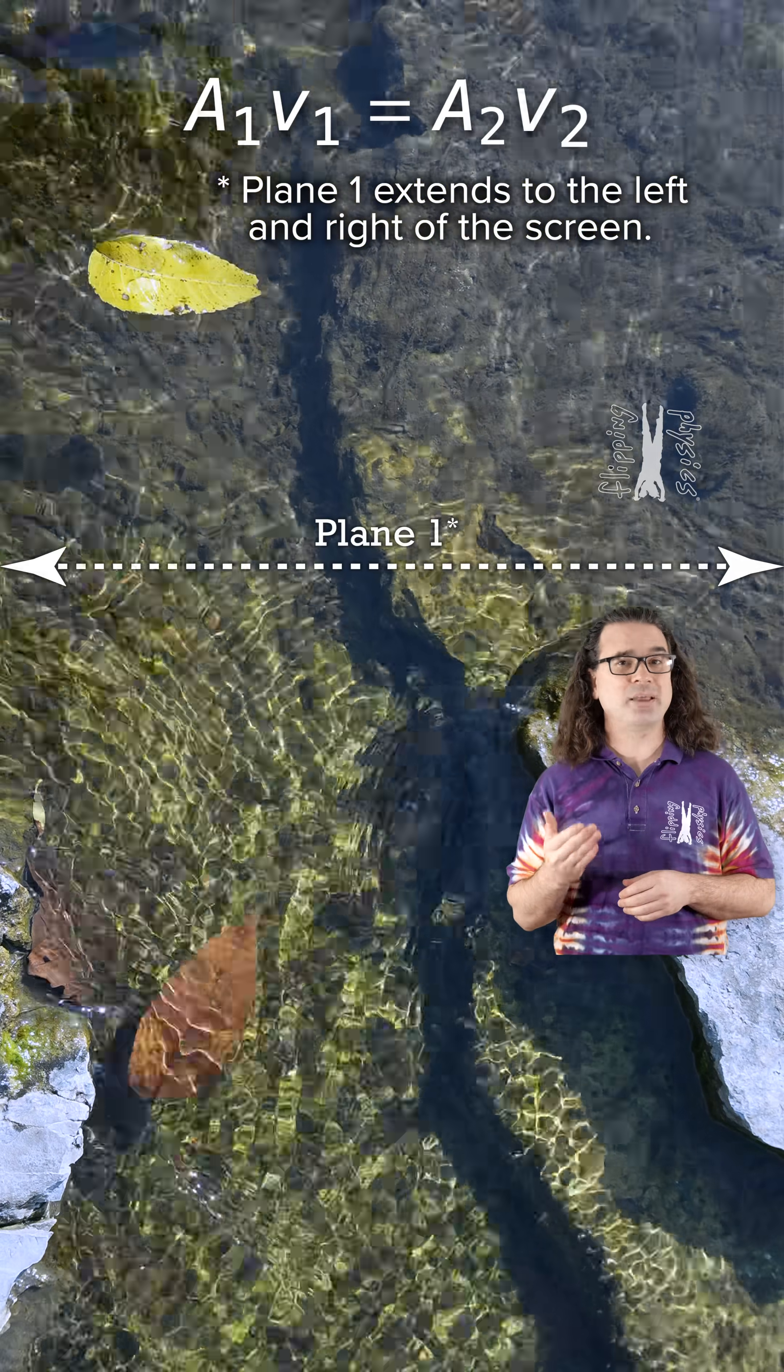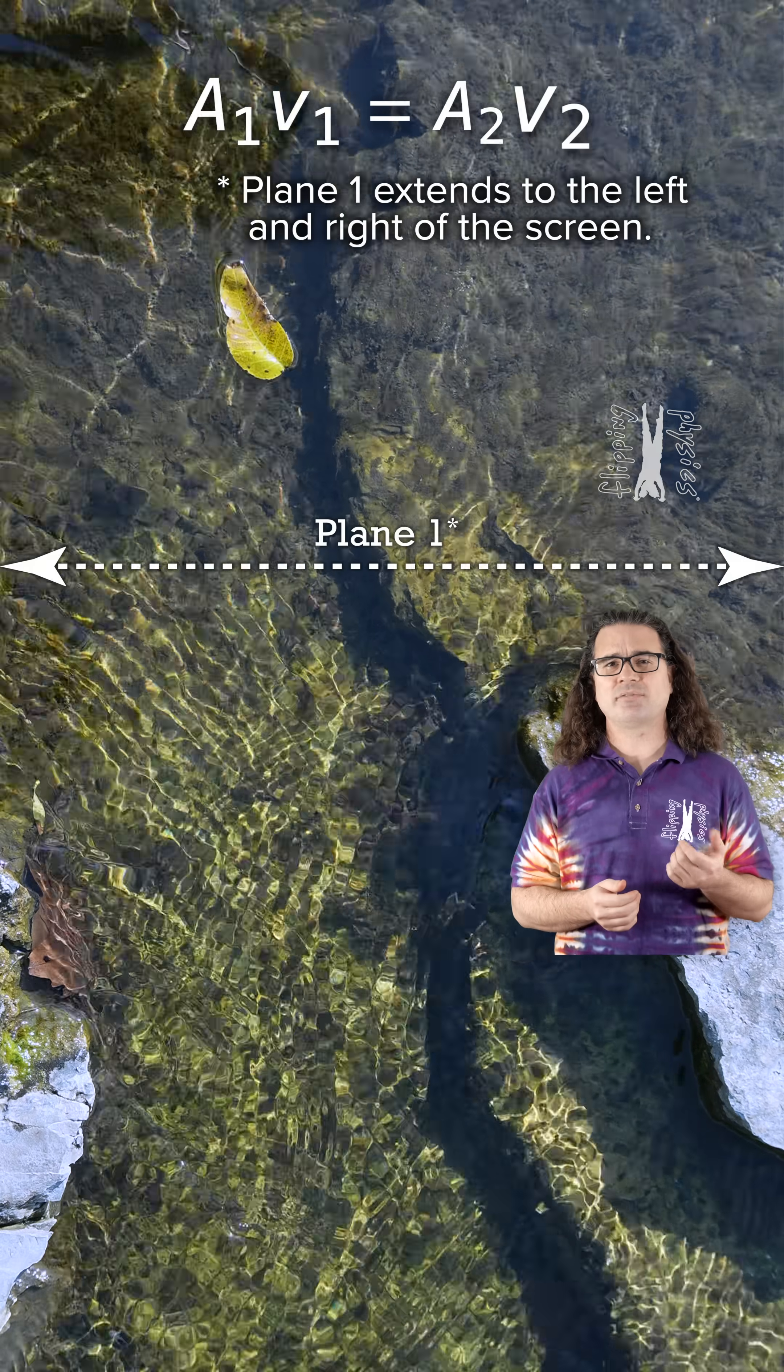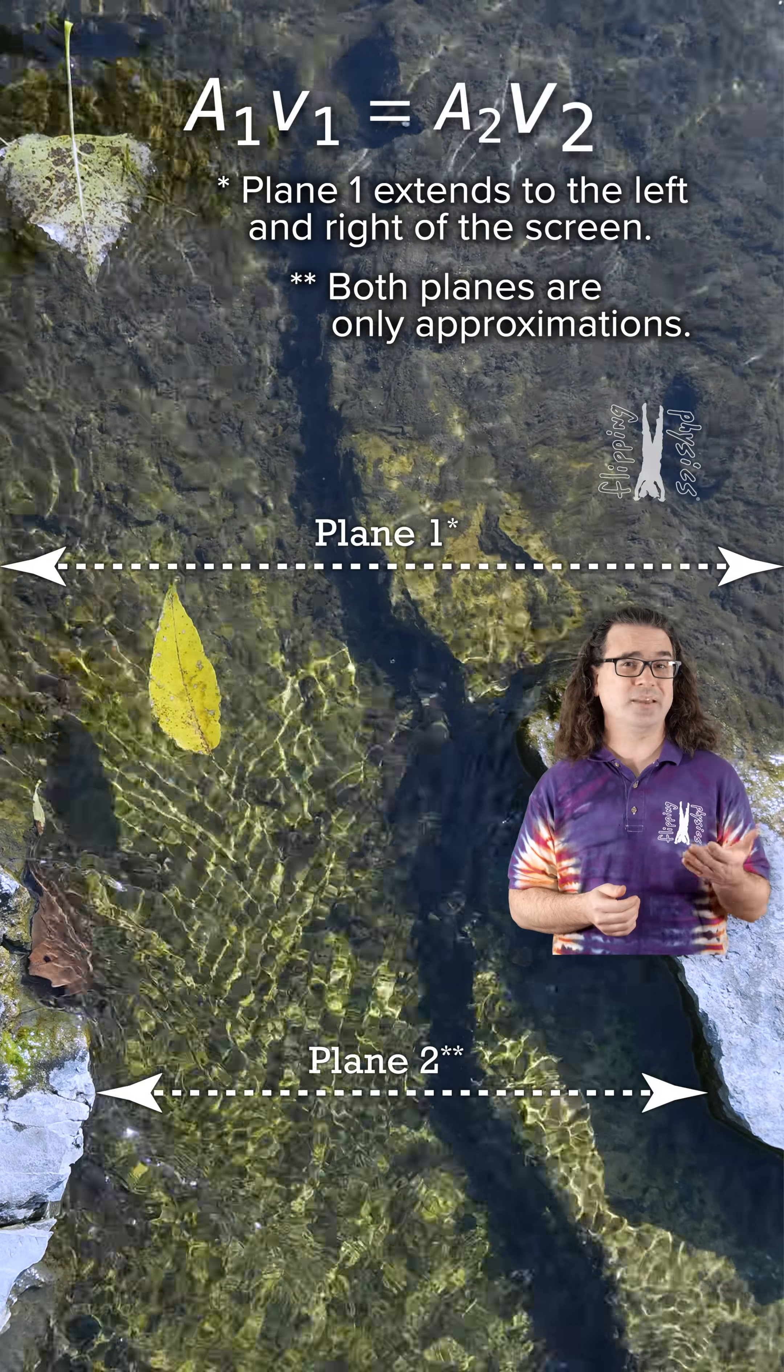The cross-sectional area of the water at plane 1 times the speed of the water through plane 1 equals the cross-sectional area of the water at plane 2 times the speed of the water through plane 2.